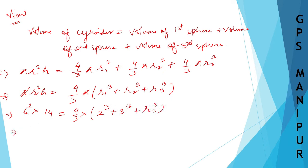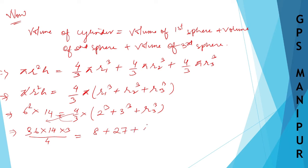Now, 6² = 36, so 36 × 14. Moving (4/3) to the left side, we multiply both sides by (3/4): 2³ = 8, 3³ = 27. So we need to solve for r3³ from 36 × 14 × (3/4) = 8 + 27 + r3³.